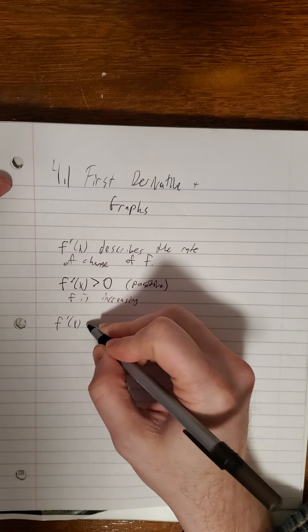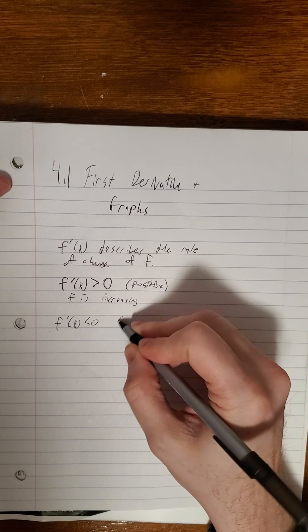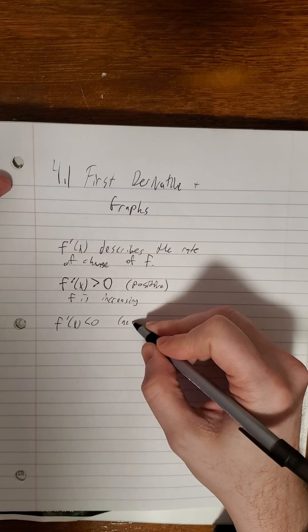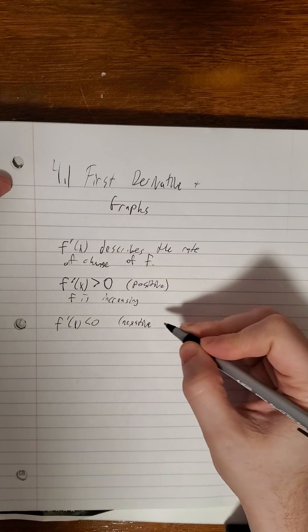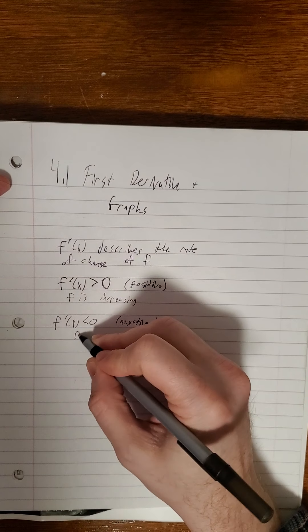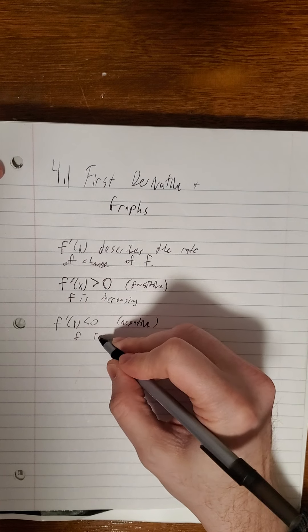Whenever f prime of x is less than zero, in other words negative, the graph of f is decreasing.